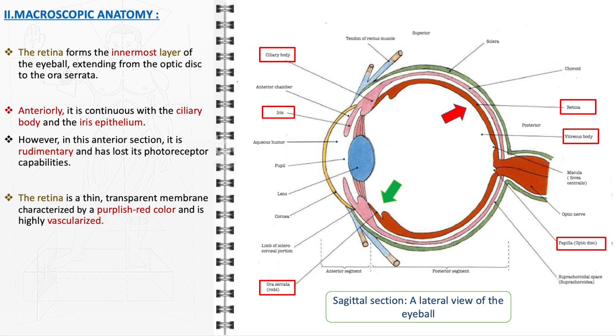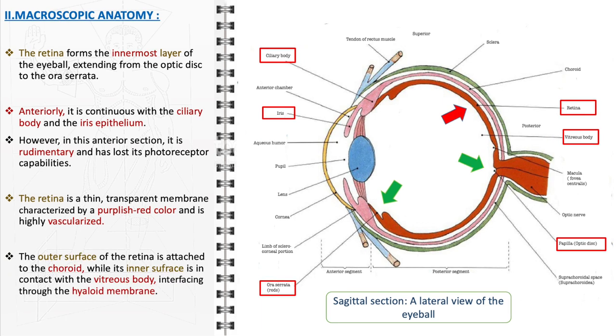This thin, transparent membrane is distinguished by its purplish-red hue, a reflection of its high vascularization which is essential for its metabolic needs. The outer surface of the retina is intricately attached to the choroid, facilitating the supply of nutrients and oxygen. On the inner side, the retina interfaces with the vitreous body through the hyaloid membrane, a critical component in maintaining the eye's structural integrity and optical properties. This strategic positioning between the choroid and the vitreous body allows the retina to effectively capture and process visual information, making it a cornerstone of the human visual system.